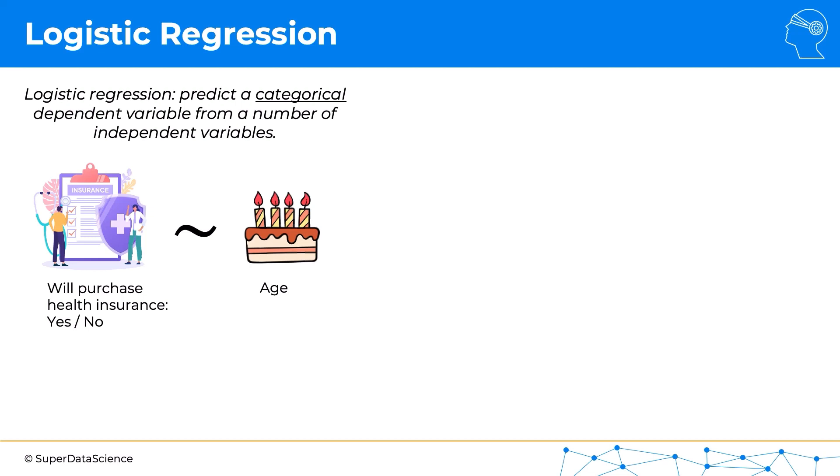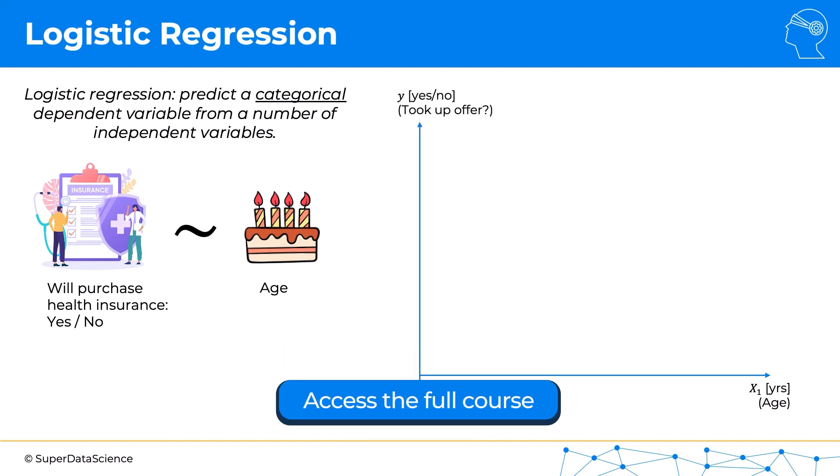On the x-axis we would have age, on the y-axis we would have yes or no—did they take up the offer or not. Let's say our x-axis is somewhere between 18 years of age and 60 years of age, and our y-axis simply has a binary outcome: yes and no.